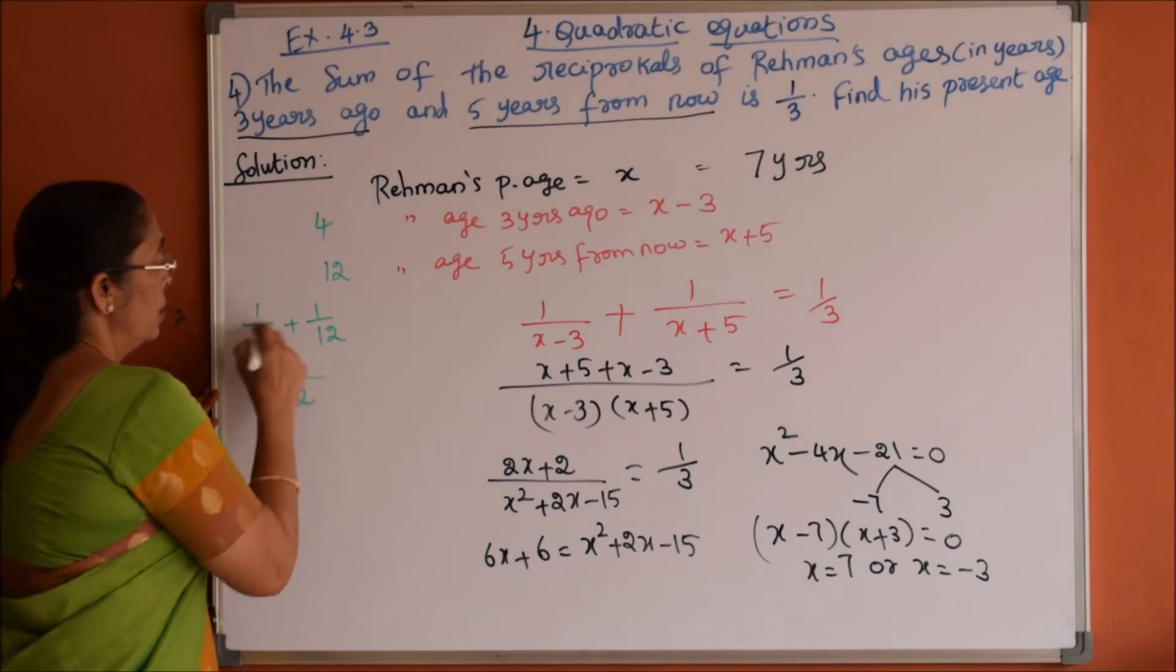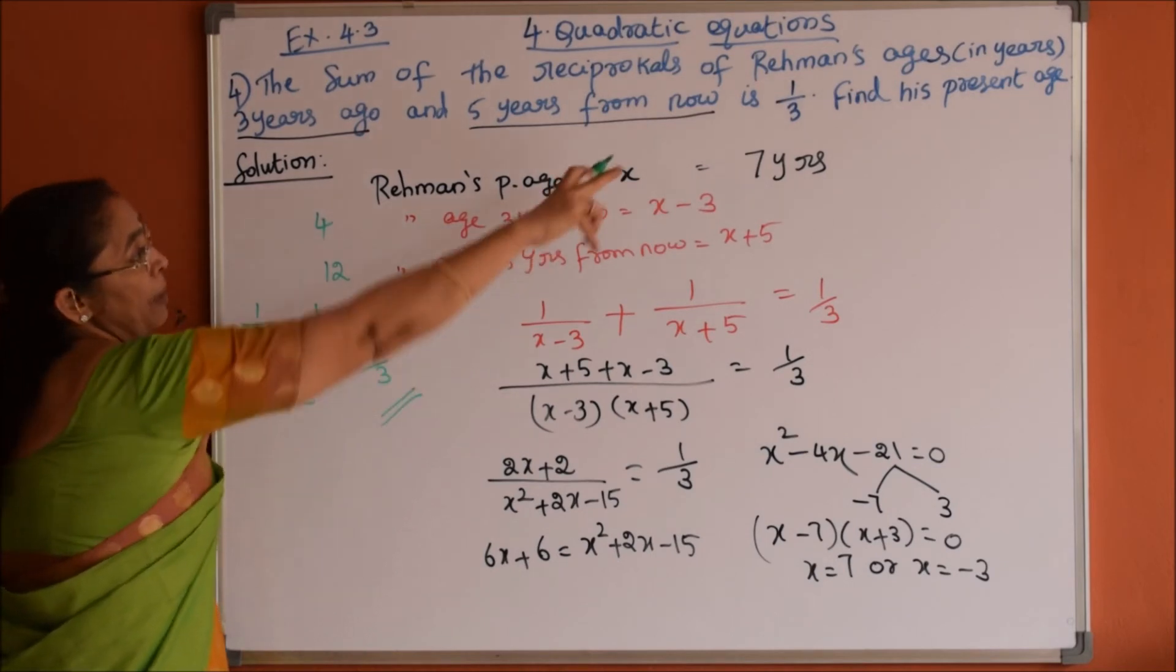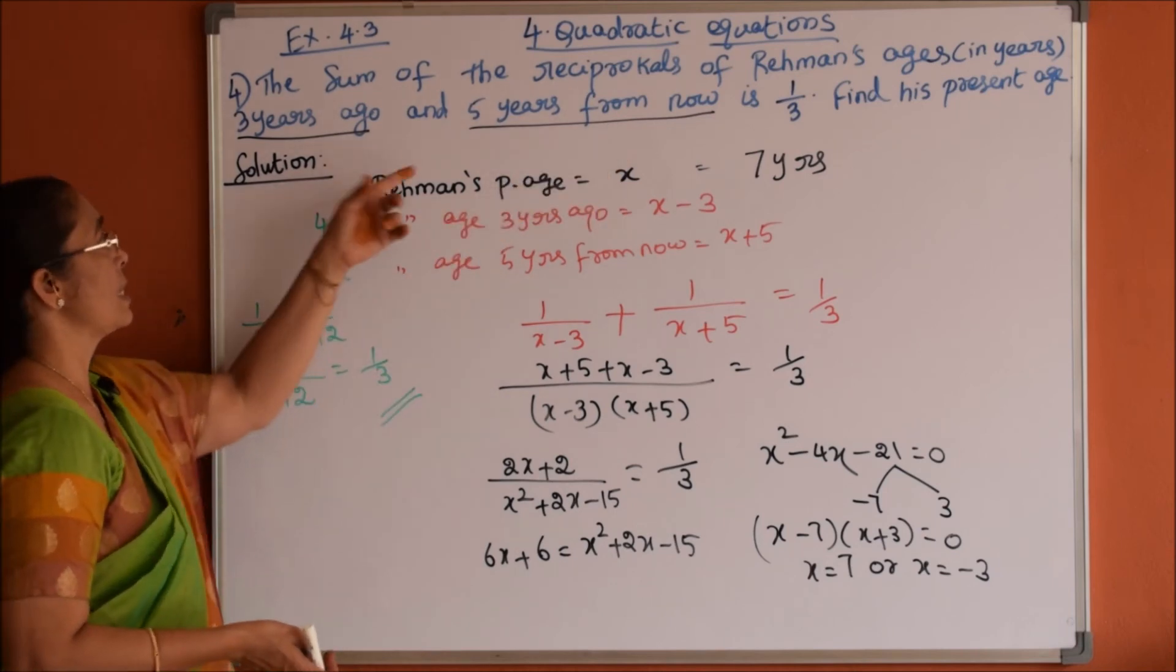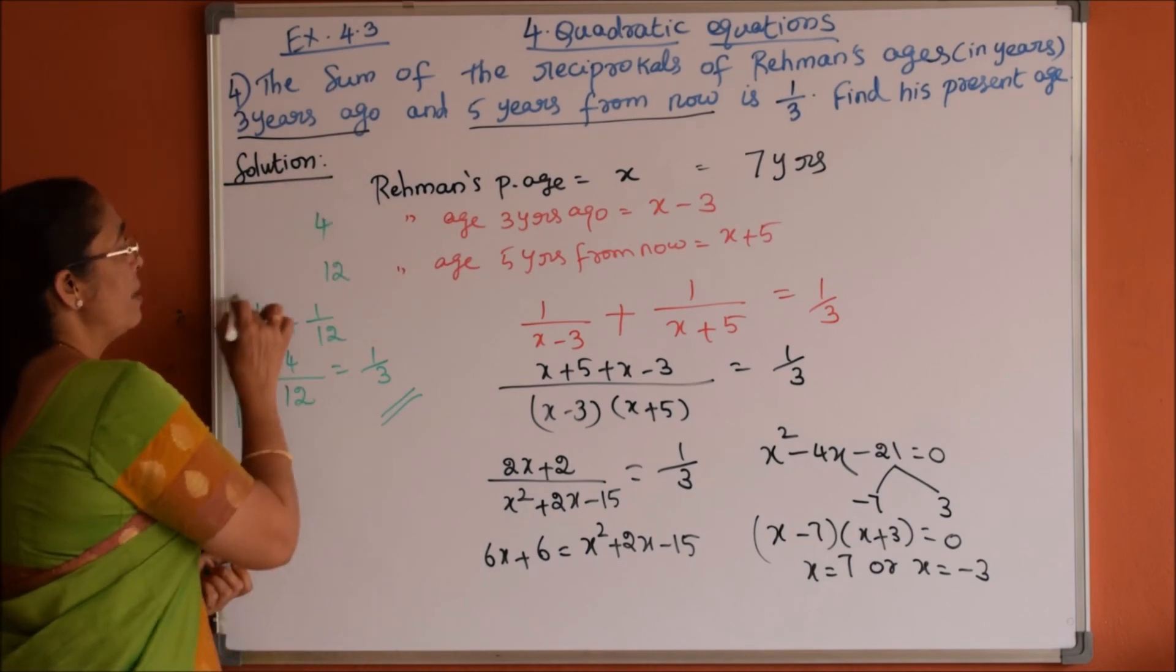So LCM is 12, 3 plus 1 is 4, 4 by 12 which is nothing but 1 by 3. So sum of the reciprocals of Rahman's ages 3 years ago and 5 years from now is 1 by 3, we verified.